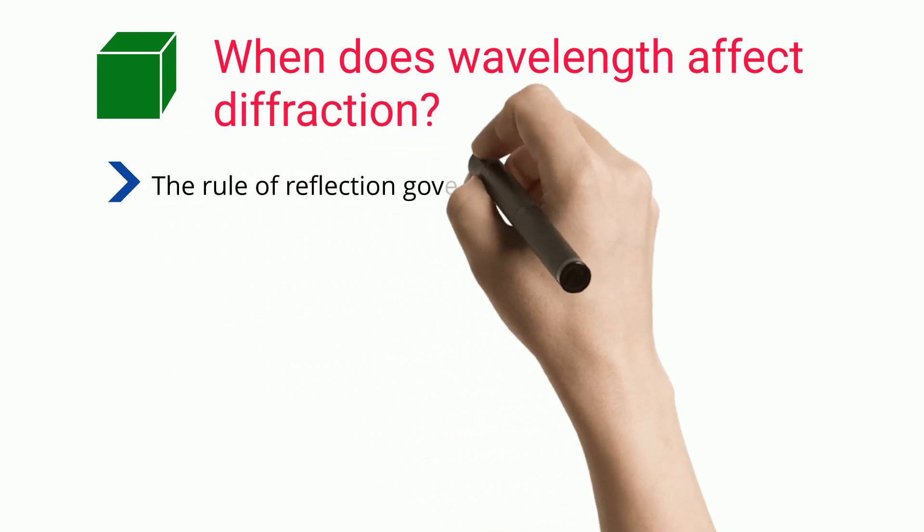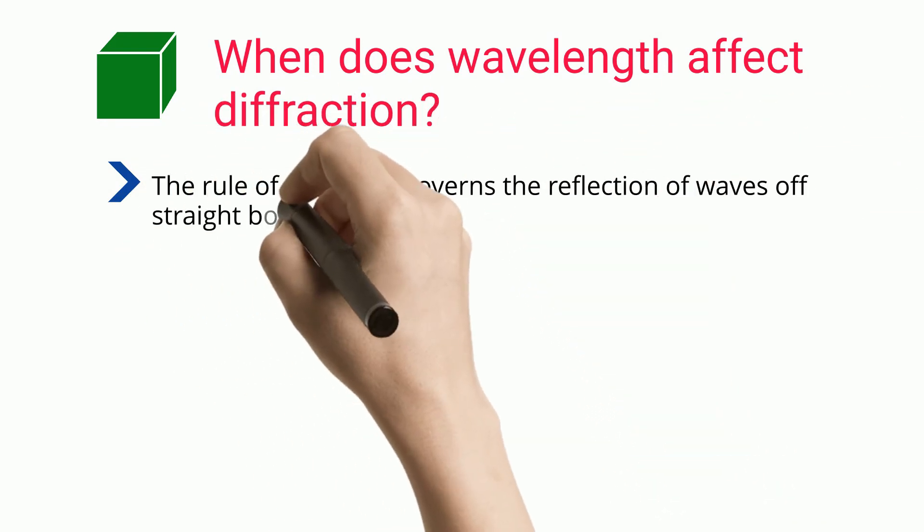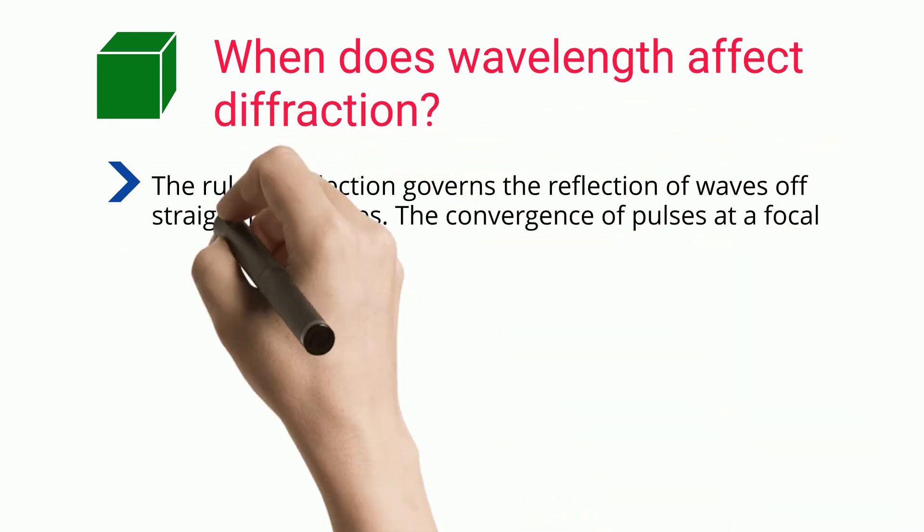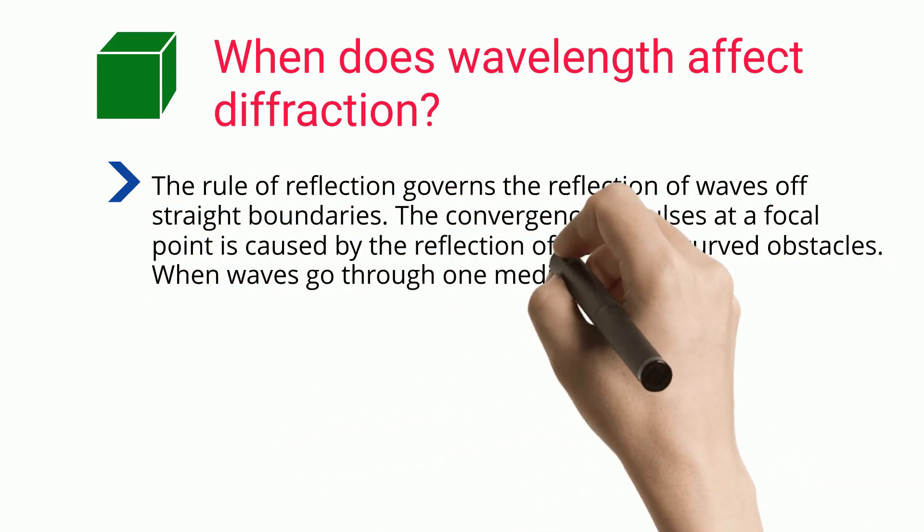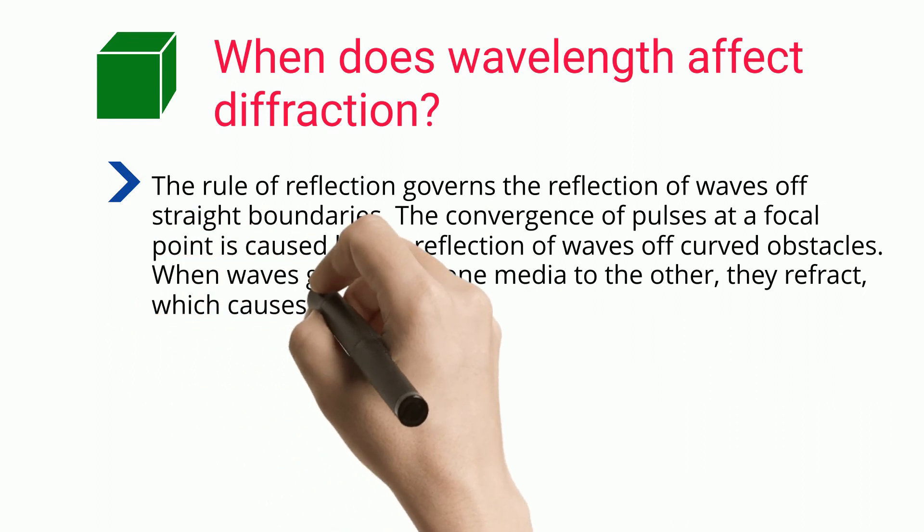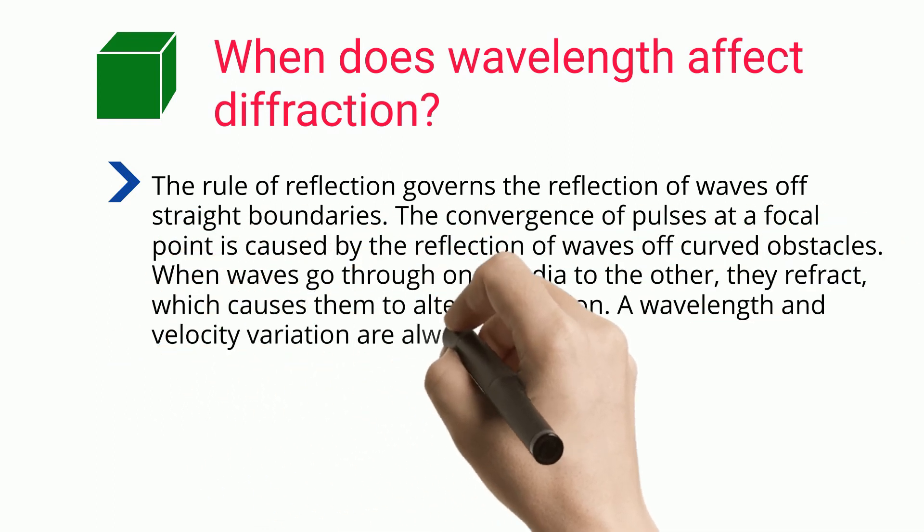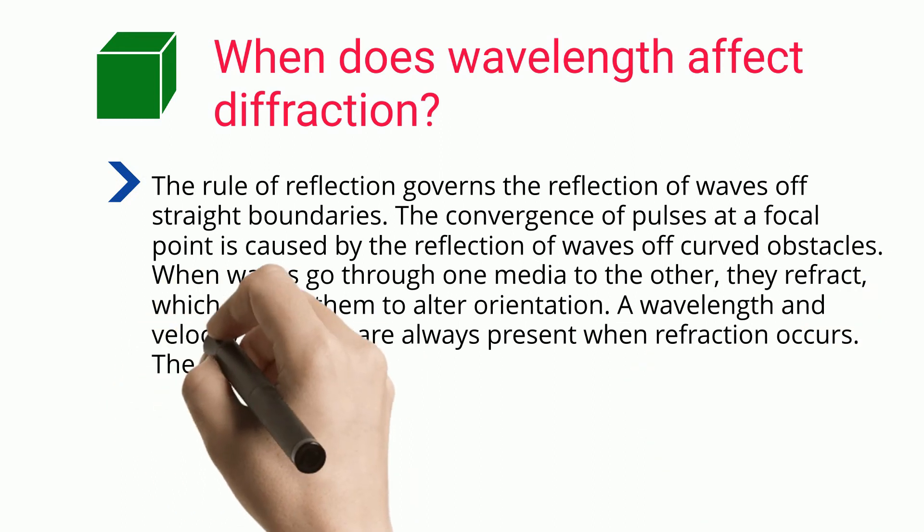The law of reflection governs the reflection of waves off straight boundaries. The convergence of pulses at a focal point is caused by the reflection of waves off curved obstacles. When waves go through one media to the other, they refract, which causes them to alter orientation.